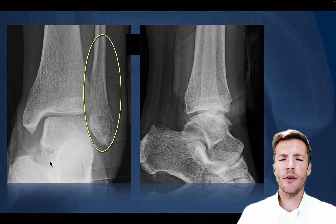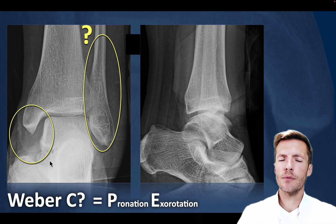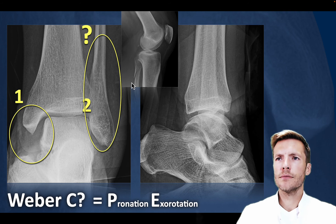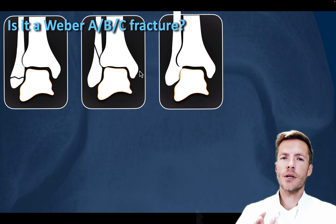Last case: we do not see a fibular fracture. Could it still be a Weber C or pronation axial rotation injury? Yes, that is possible. Starting with grade 1 — medial malleolus — we do not see a fracture, maybe some soft tissue swelling. Grade 2 cannot be assessed. Grade 3 — a high fibular fracture — is still possible. Grade 4 — posterior malleolus — cannot be trusted as we do not have a clear lateral view, so we cannot rule it out. Luckily, we made an x-ray of the lower leg given the possibility of a pronation axial rotation injury, and we confirm at least a grade 3 injury, possibly grade 4. This is how the algorithm works.